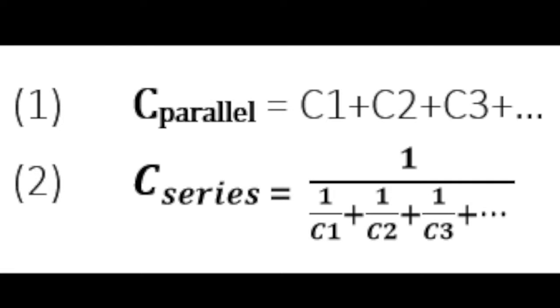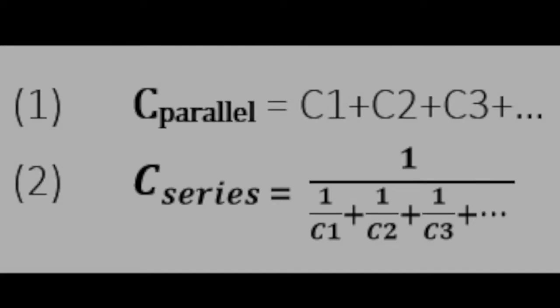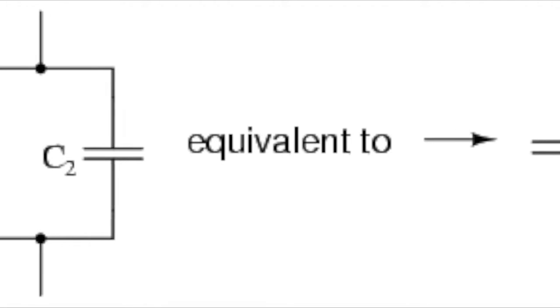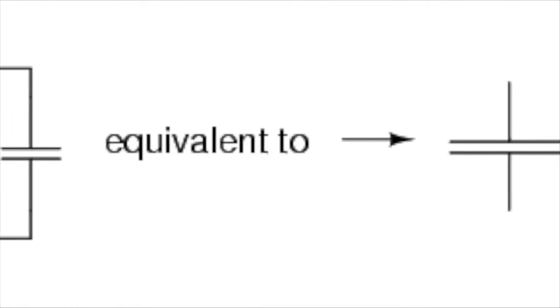In a parallel configuration, the capacitance is the sum of all of the capacitors together. In a parallel series, it is the same thing as increasing the surface area, as you can see right here, of the conductive plates.